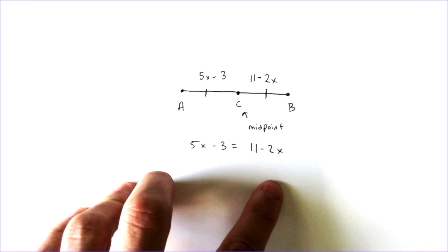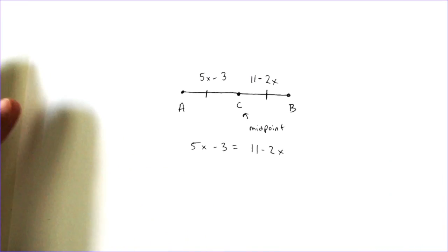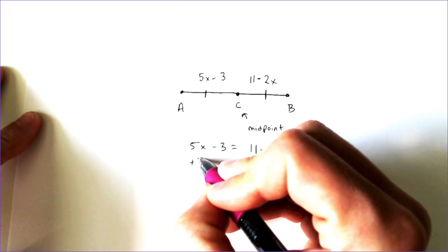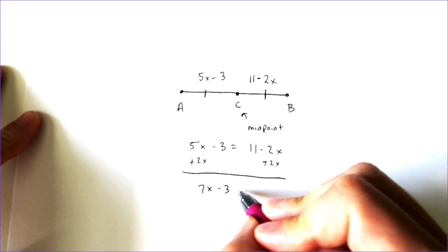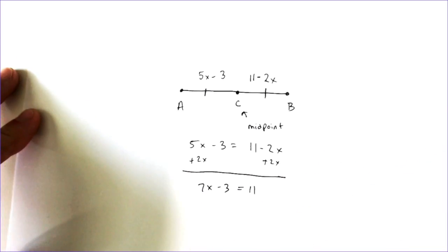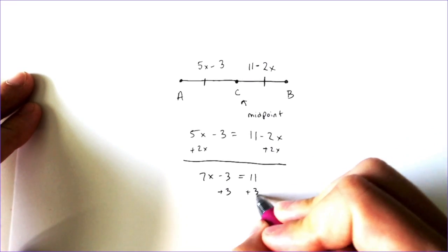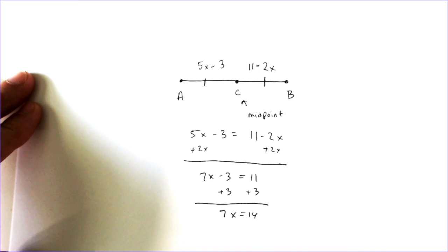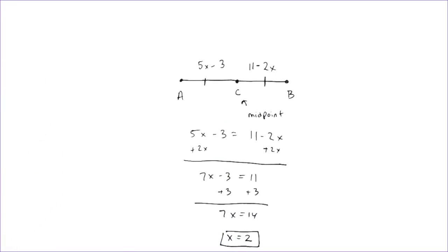I set 5x minus 3 equal to 11 minus 2x, and then we're going to solve that equation. Adding the 2x, we get 7x minus 3 equals 11. Then adding 3, we get 7x equals 14. When we divide by 7, x equals 2.